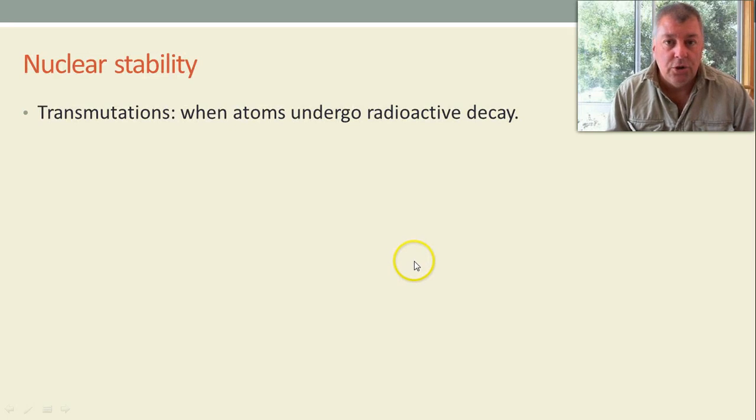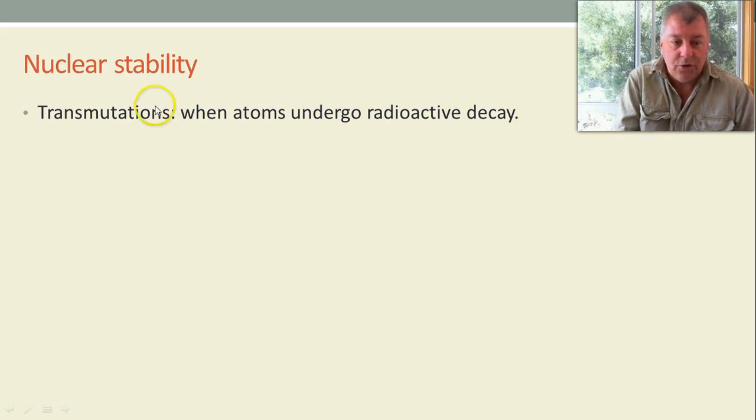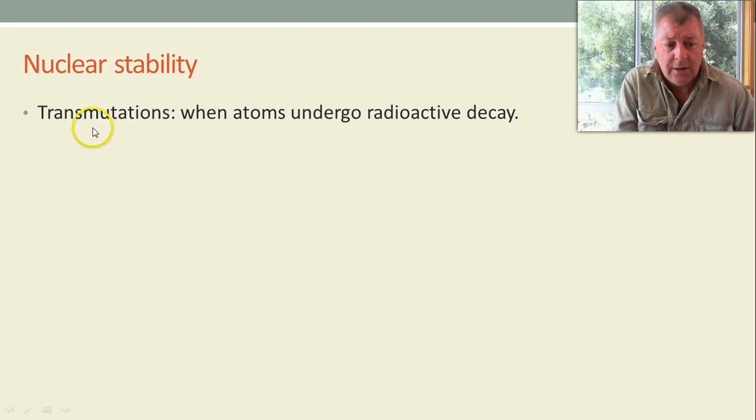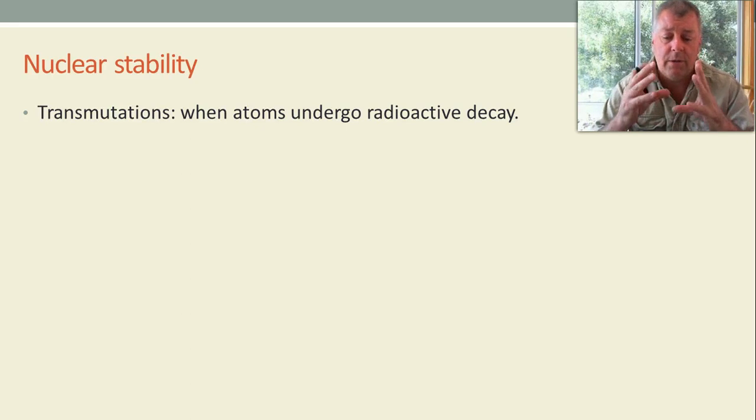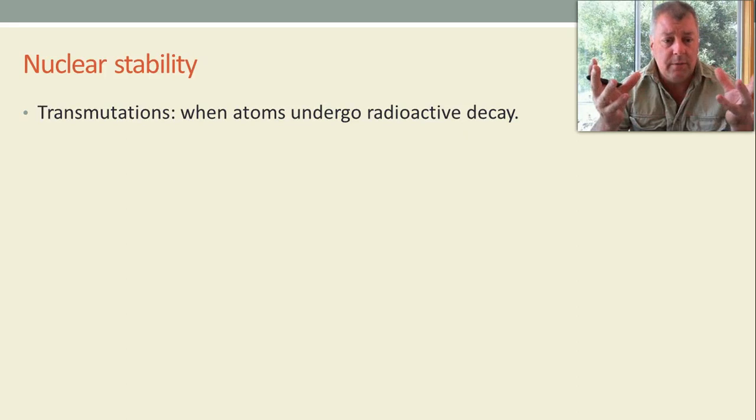First of all, nuclear stability. There's a new term we have to learn, which we don't use that often but it's out there, it's called transmutations. And transmutations are when atoms undergo radioactive decay and the end product you start off with one element and once they undergo radioactive decay you usually end up with a different element. And so they transmutate.